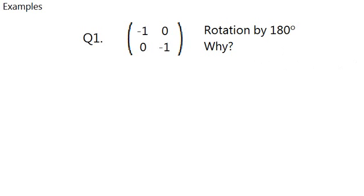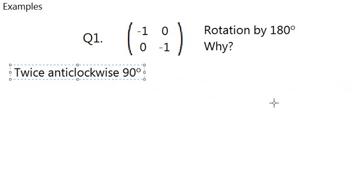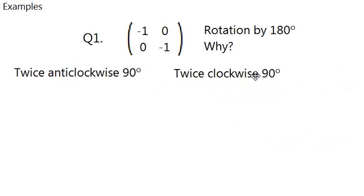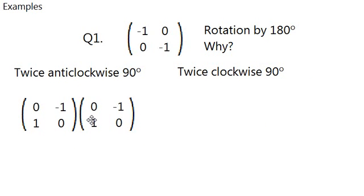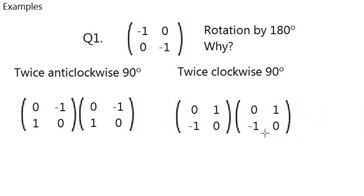Well, rotation by 180 can be defined in two ways, rotate twice anticlockwise or rotate twice clockwise, and those two have their own way of expressing in matrix form. And that is basically just two of them multiplied together, or the clockwise 90 degrees squared can be written in this form.